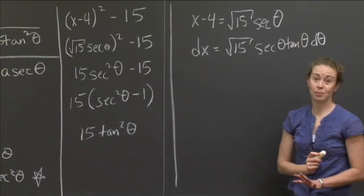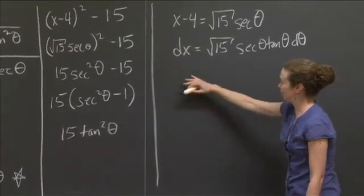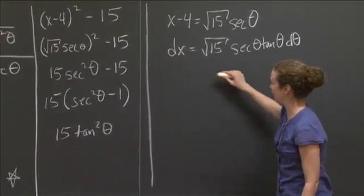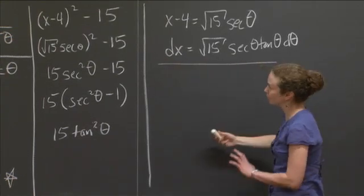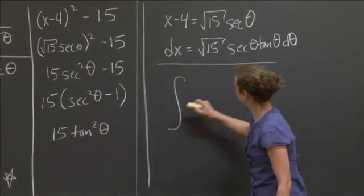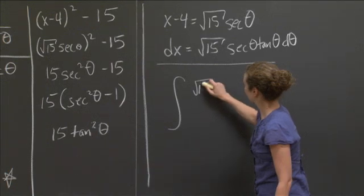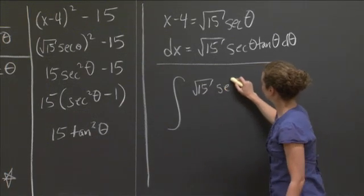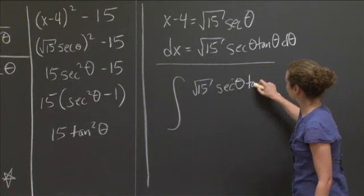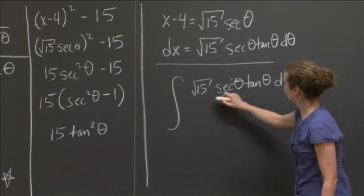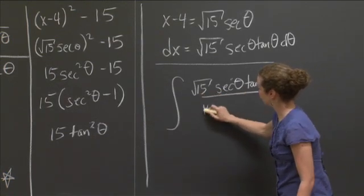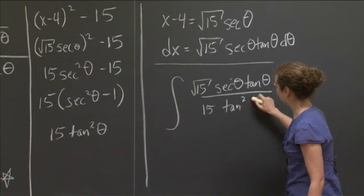So we get dx is equal to square root of 15. Well, what's the derivative of secant theta? It's secant theta tangent theta d theta. So now I have all the pieces I need. And I'm actually going to rewrite the whole thing over here underneath so that I can work with it a little bit more. So the dx is in the numerator. Square root 15 secant theta tan theta d theta all over 15 tan squared theta.